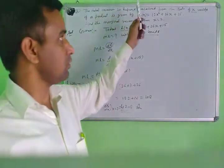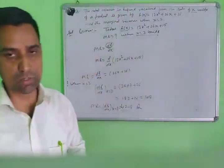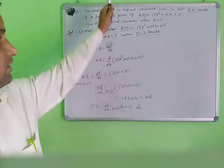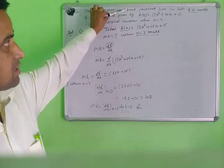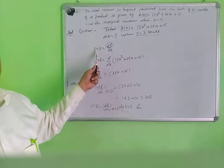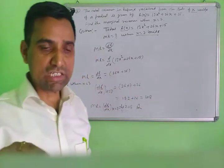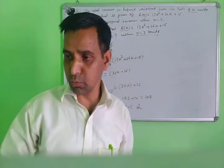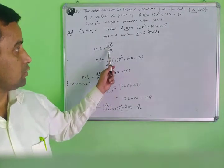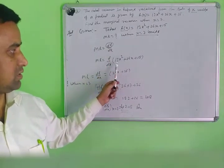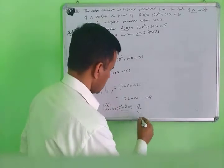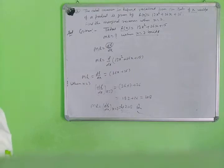This question looks difficult at first glance, but it is very easy. Understand the question, identify what is given and what you need to find. The definition of marginal revenue is the rate of change of total revenue with respect to number of units sold. Calculate and find the answer — 208 rupees. Then we start the next topic.